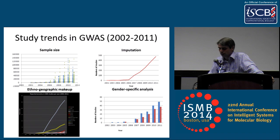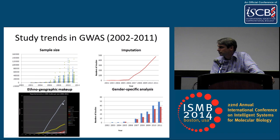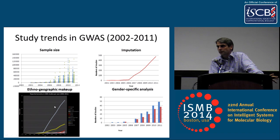In the ethno-geographic realm, this line represents studies including European ancestry studies. The yellow line is mixed studies with multiple ancestries, and the green line is Asian. What this shows is that the growth in European ancestry studies is far surpassing other ethno-geographic boundaries, which highlights opportunities for a lot more discovery if we can sample more diverse samples.